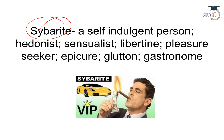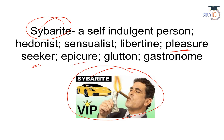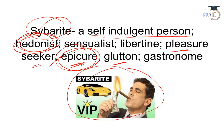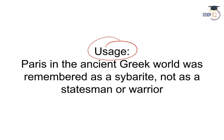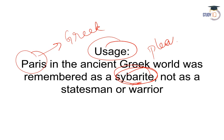Moving on to sybarite. Sybarite shabd ka arth hota hai — aisa vyakti jo hamesha pleasure ko hi bohot zyada ehmiyat deta hai. Synonyms: pleasure seeker, epicure, glutton, self-indulgent person, hedonistic, libertine, gastronome. Usage: Paris in the ancient Greek world was remembered as a sybarite, not as a statesman or warrior — sirف pleasure ko ehmiyat dete the.